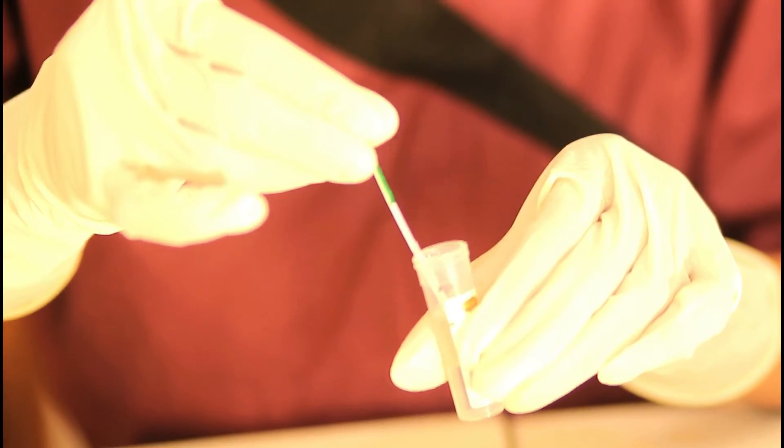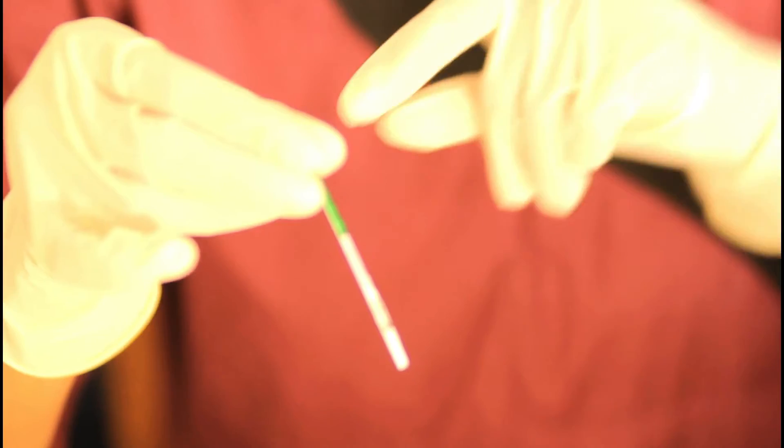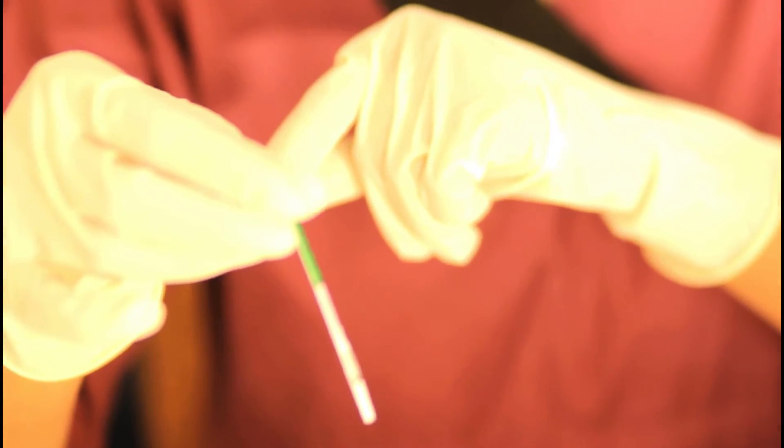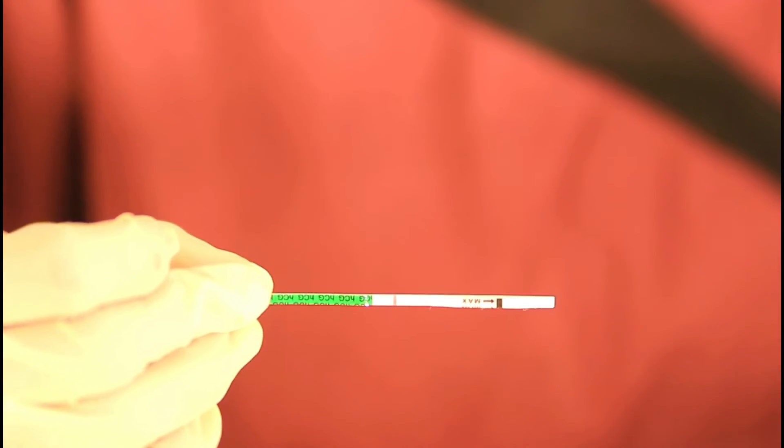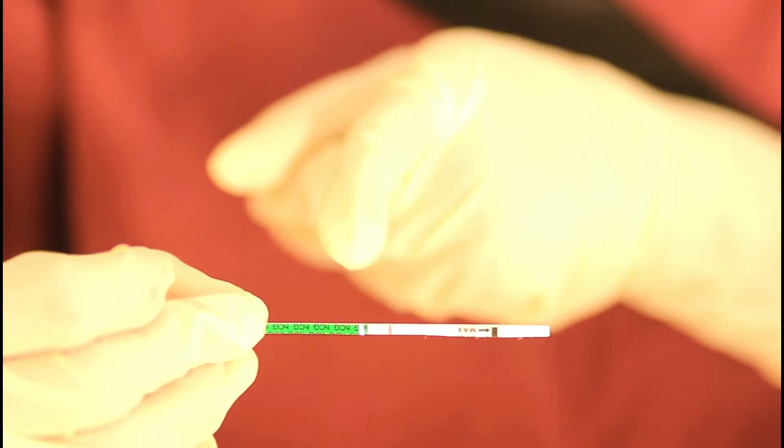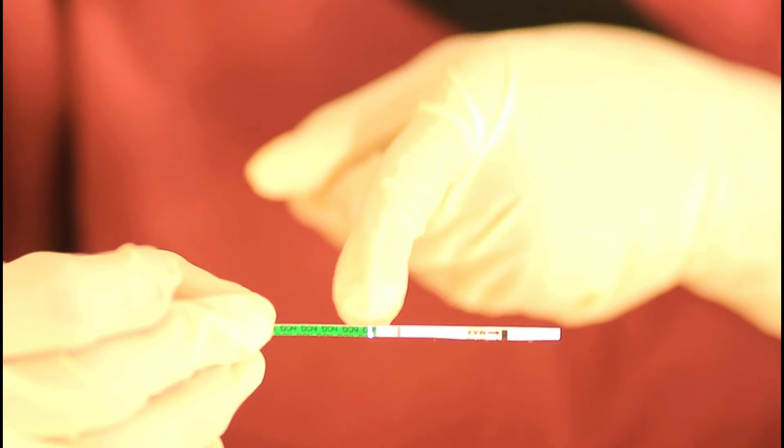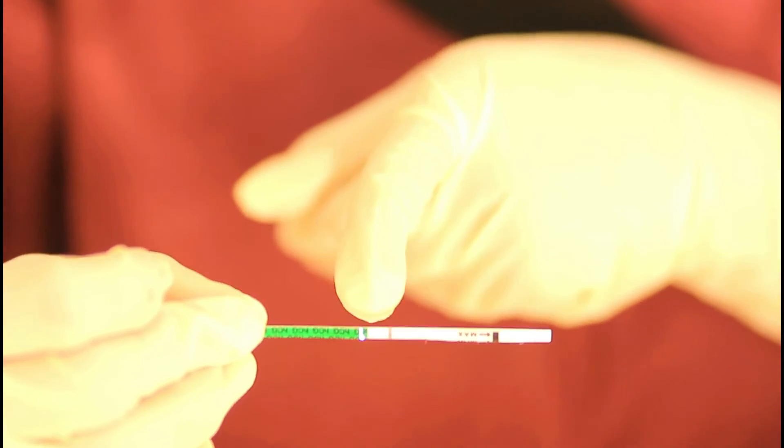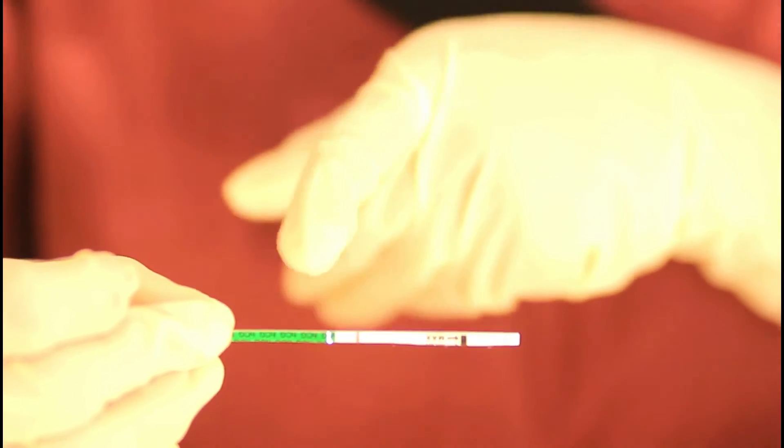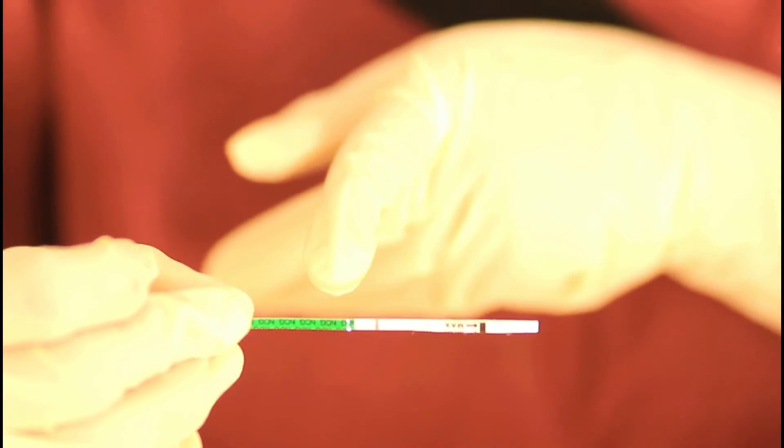Now it has gone all the way up to this point so we are going to wait for about three to five minutes and see the results. After five minutes we can see that only one line appears here closer to the handle which is the control line and that means that the test is negative.